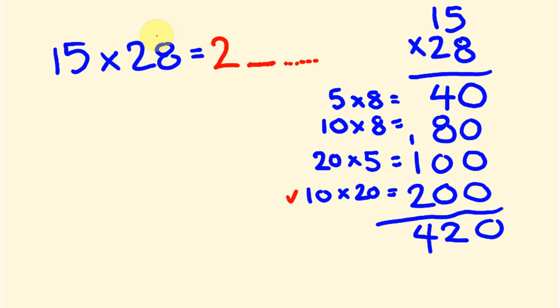The next part we do is this units part, the 5 times 8, which is 40, so I'm going to put the 4 in there. The next part we do is where we multiply this number by this number, the 10 times 8 and the 20 times 5. Because this is the tens part, we're going to be putting the answer in the tens part.